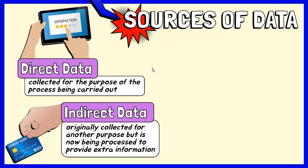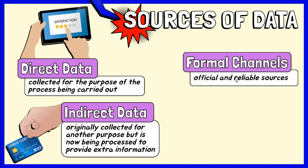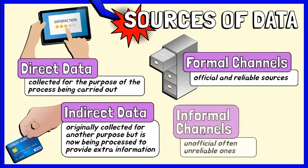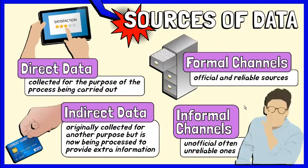Data can be gathered from formal or informal channels. Formal channels are the official and reliable sources, such as memos, letters, the company bulletin board, and advisories. Informal channels are the unofficial, often unreliable ones, such as office gossip, informal meetings, and rumors.